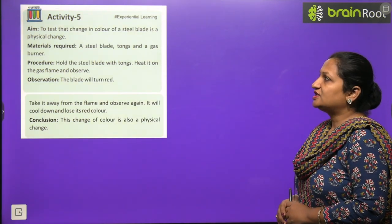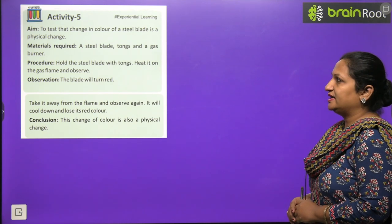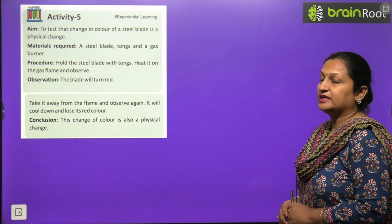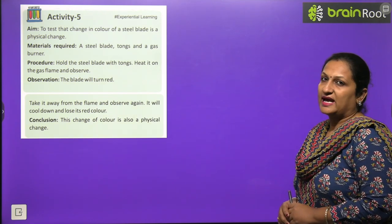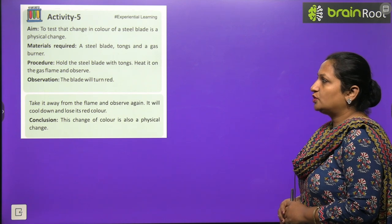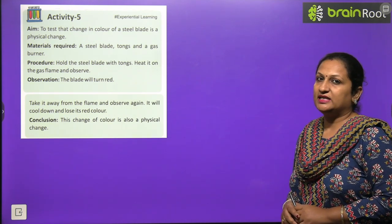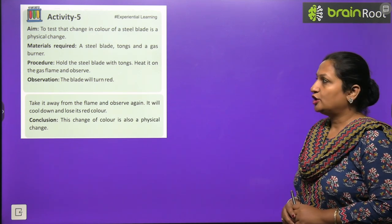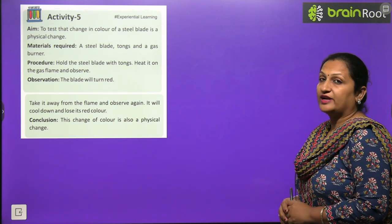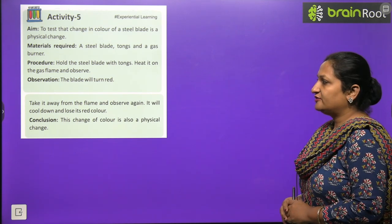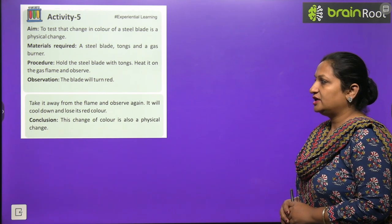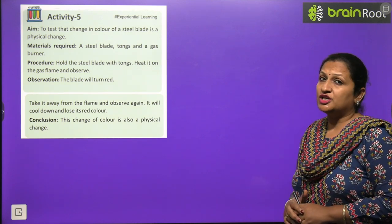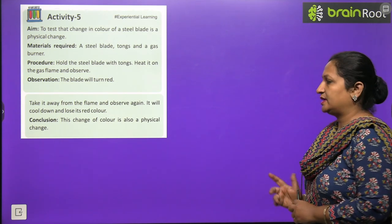Activity: Testing the change in color of a steel blade. Take a steel blade, tongs, and a gas burner. Hold the blade with tongs and heat it over the flame - after some time the blade turns red. Take it away from the flame and observe - it will cool down and lose its red color. This shows that change in color due to heating is a type of physical change.